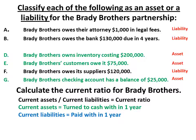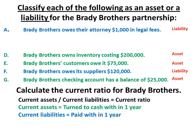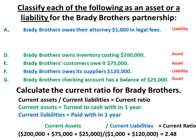Next are our current liabilities — those are the ones we're going to pay within one year. Of our three liabilities, two of them — the ones that just turned blue — are going to be paid: their attorney fees and their suppliers. The bank loan due in four years is not current, so we won't use that one. To figure out the current ratio, we take current assets divided by current liabilities. We add our current assets: $200,000 plus $75,000 plus $25,000, then divide by current liabilities of $1,000 plus $120,000, to get a current ratio of 2.48.